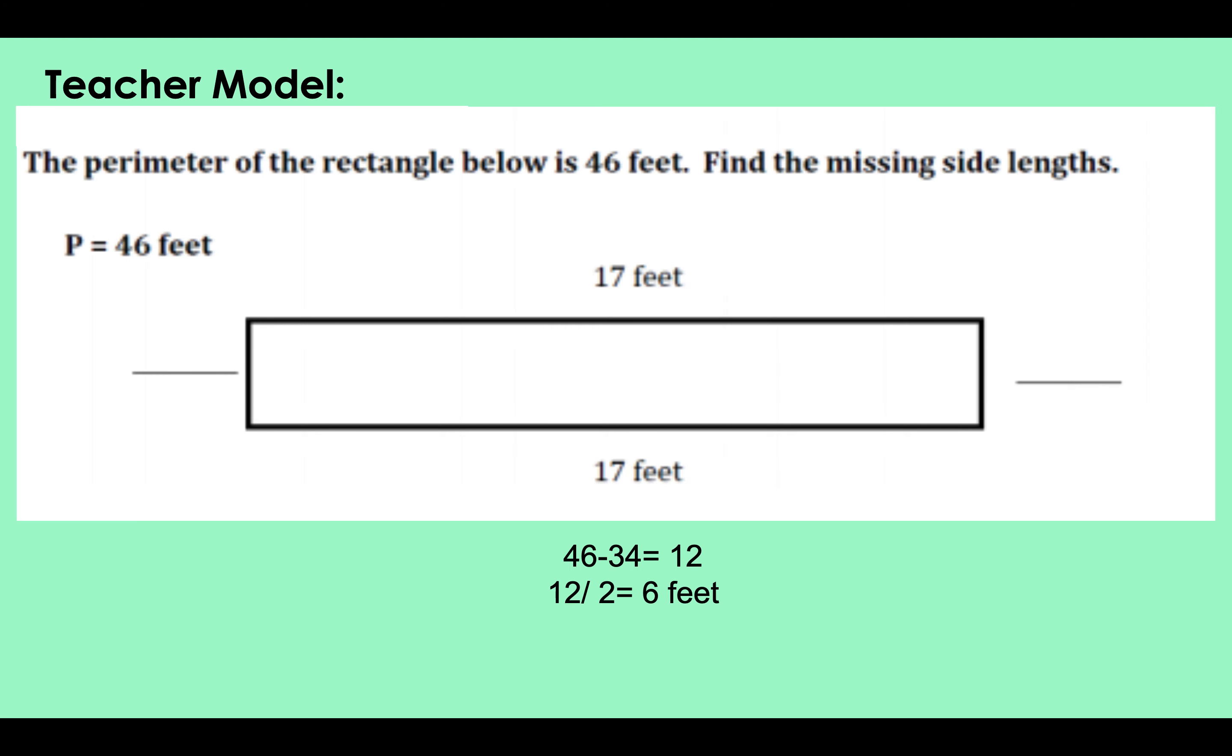The perimeter of the rectangle below is 46 feet. Find the missing side lengths. Okay, so the first thing I want to do is add 17 plus 17. I know 17 plus 17 is 34 feet, so then you subtract that from the perimeter they give you. You don't need to figure out the perimeter, you're finding the missing side length.